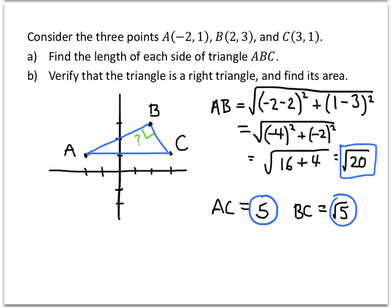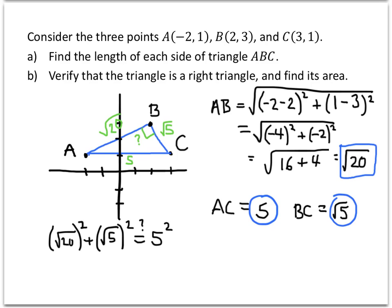So what would have to be true about these three distances for this to be a right triangle? We have AB = √20, BC = √5, and AC = 5. So we check: (√20)² + (√5)² should equal 5². Squaring a square root removes the radical, giving us 20 + 5 = 25. And since 5² = 25, this checks out. So we know the triangle really is a right triangle.